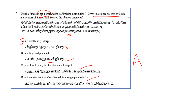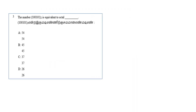Next question: the binary number 1,1,0,1,0,1,0,1 is equivalent to which octal number? We will use the easy method — grouping three digits at a time from right to left for binary to octal conversion.